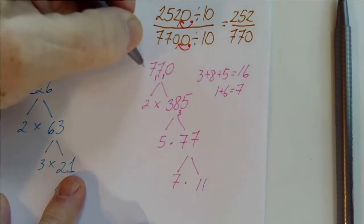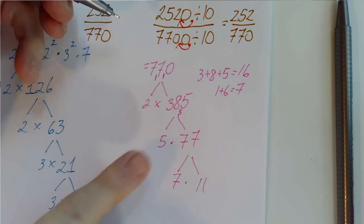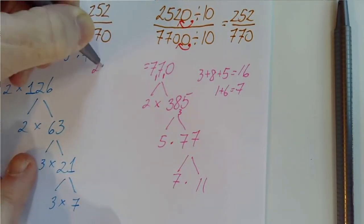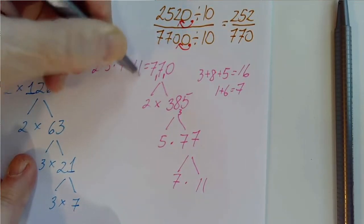And now we can gather. We have 1 two, 1 five, 1 seven, and 1 eleven. So 2 times 5 times 7 times 11.